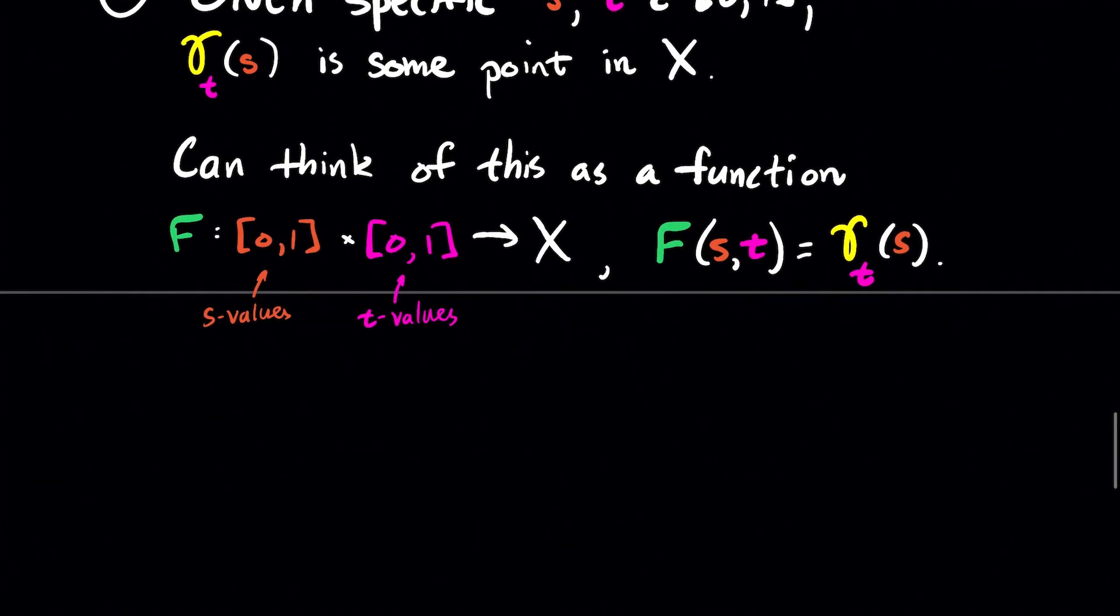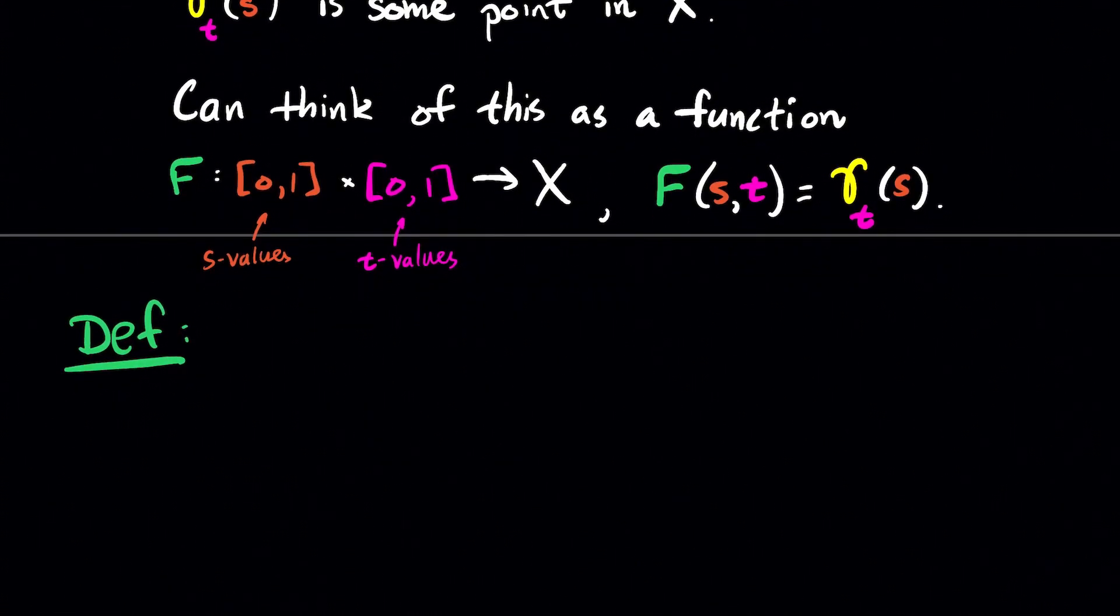And the way that we are going to define our function, F of S,T is just going to be gamma sub T of S. So these five things are going to allow us to rigorously define what a homotopy is.